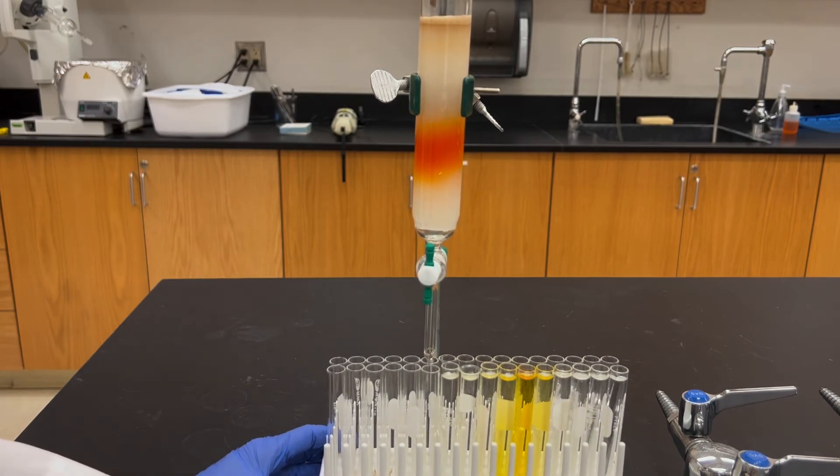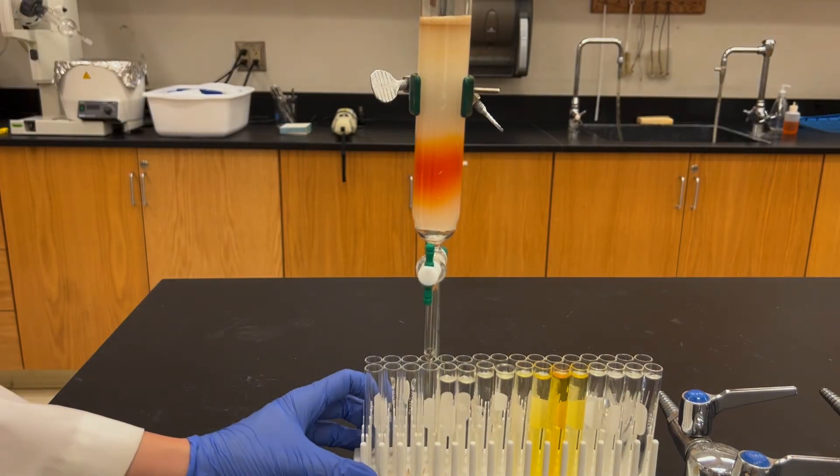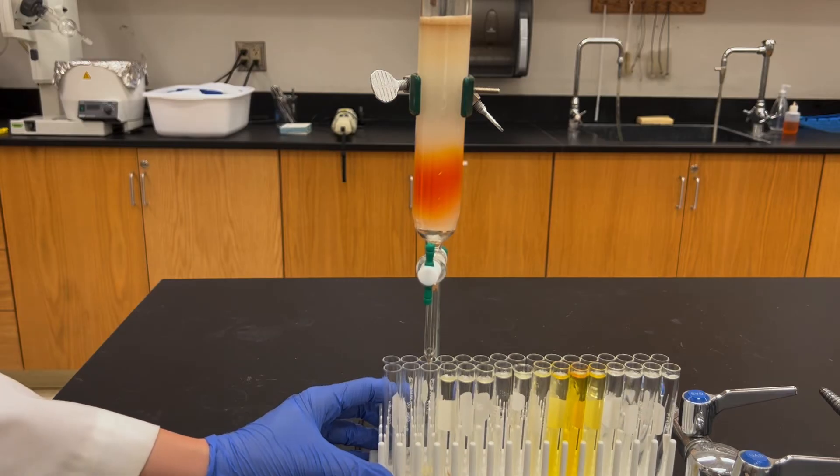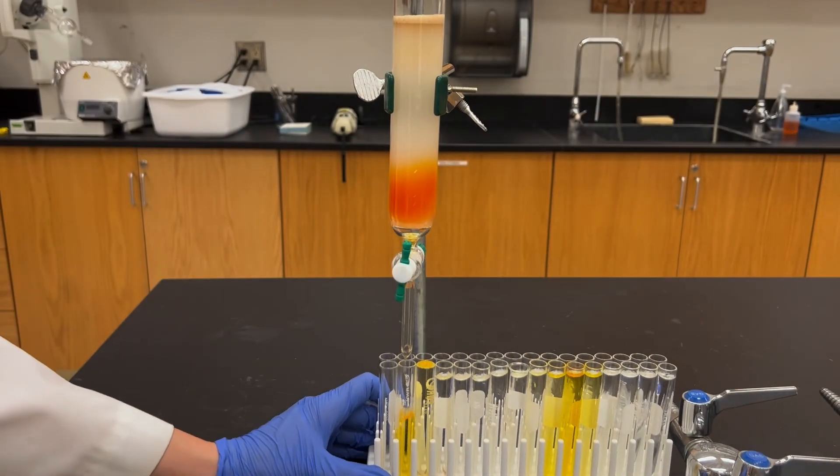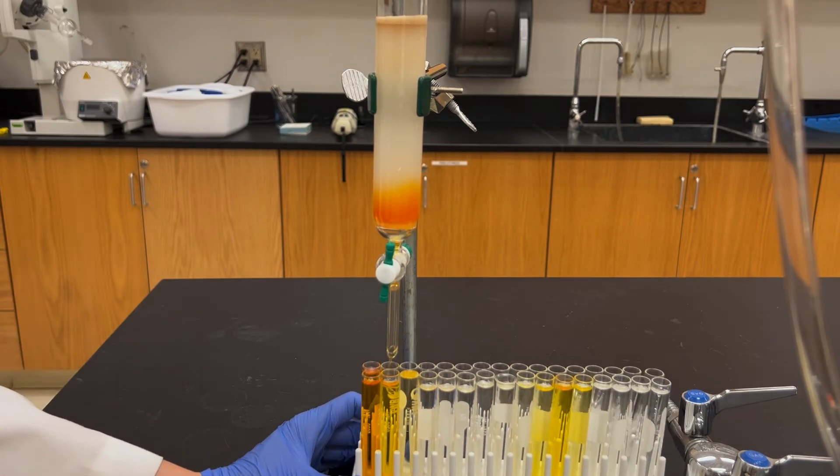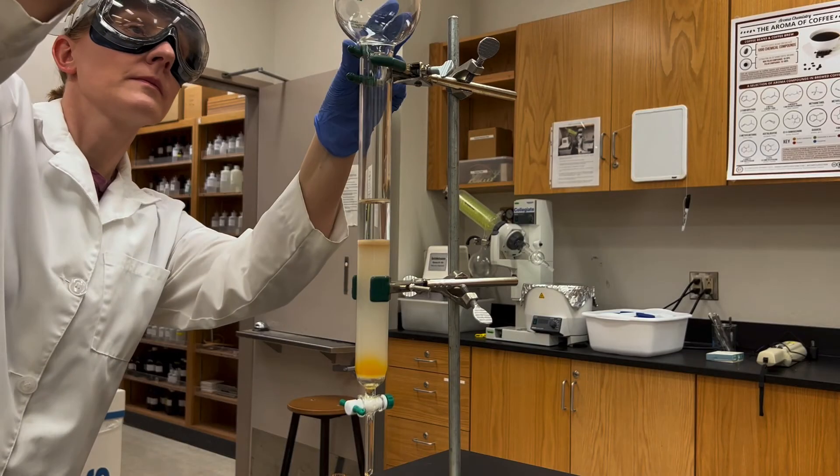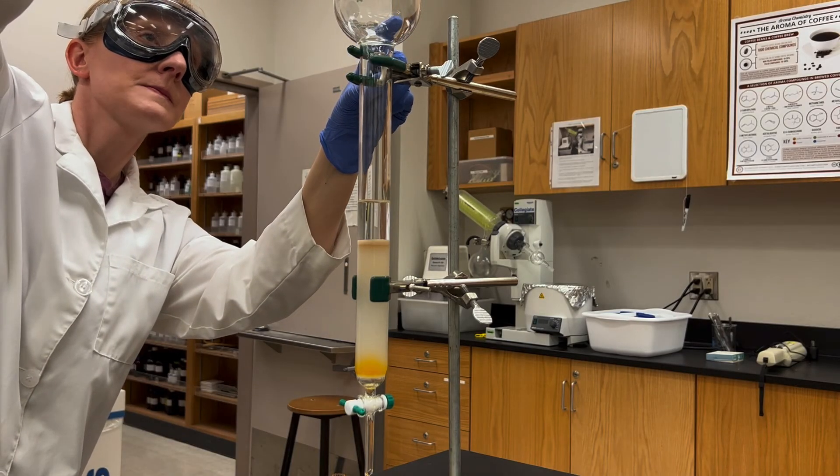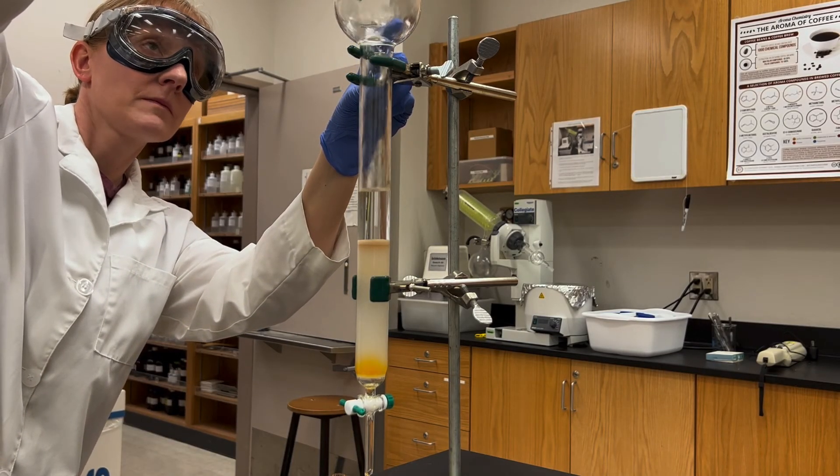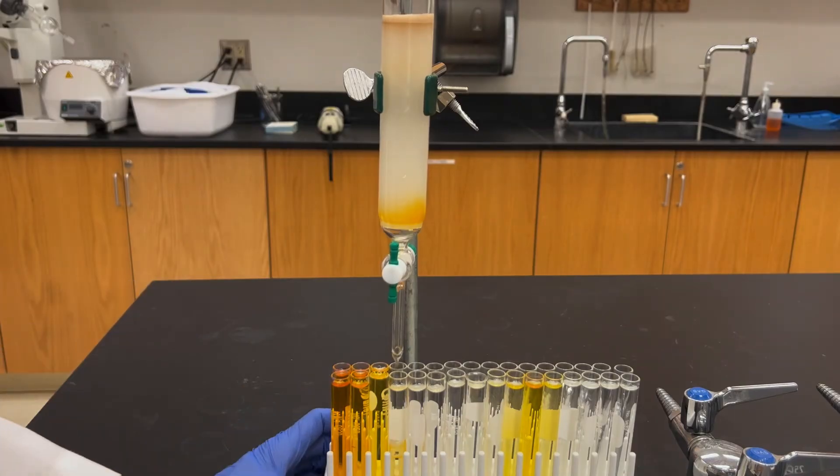I'm going to just keep collecting fractions until my orange compound has also eluted off the column. Do make sure while you're doing this to keep your eye up on the solvent level. You don't ever want the liquid level to travel lower than the sand level. You need that silica gel area to always be wet. So if it is getting a little too low, do pause the process, close the stopcock and refill the solvent reservoir, and then continue with the column.